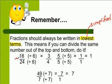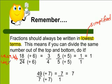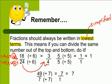For instance, if we have the fraction 18 over 24, those two numbers share some factors. The factors of 18 are: 1 and 18, 2 and 9, 6 and 3. The factors of 24 are: 1 and 24, 2 and 12, 6 and 4. As you can see, 6 is a common factor and is the greatest common factor, so we can divide that out.